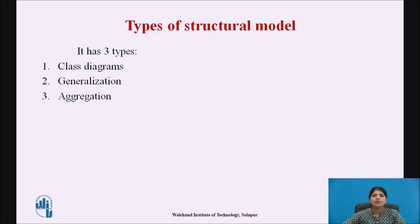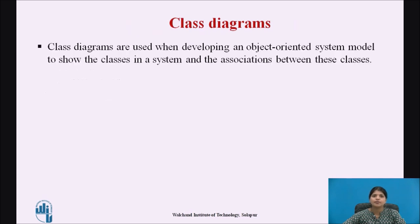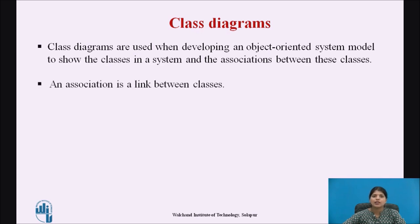Now we will see the first type of structural model, that is the class diagram. Class diagrams are used when developing an object-oriented system model. The classes in the system and the associations between these classes are shown. An association is a link between classes that indicates there is a relationship between them.